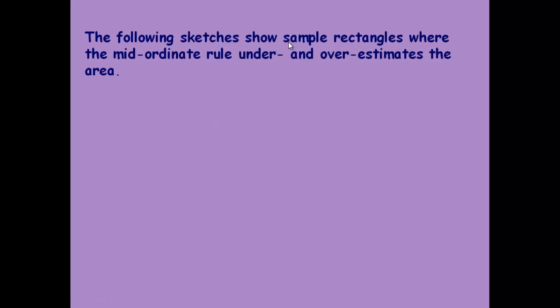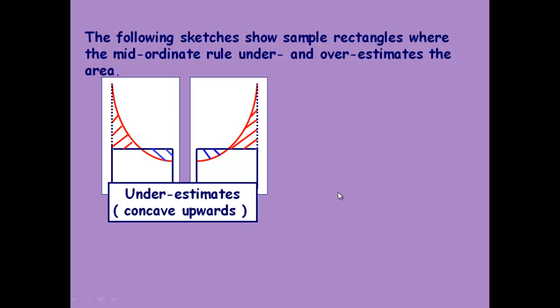This is just to give you an idea of under and over estimates using the mid-ordinate rule. You can see here that we've got under estimates because where we've got the blue bits extra, the red bit is more. It depends on the shape of the curve. And we can see in both of these that we're getting under estimates, whereas here we're getting over estimates.